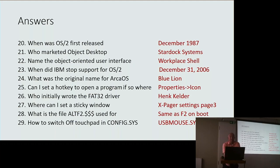When was OS/2 first released? December 1987 — I will accept 1987. Object Desktop was marketed by Stardock Systems, but I think most people knew that. The object-oriented user interface: Workplace Shell or Presentation Manager are acceptable. When did IBM stop support? December 31st, 2006 — 2006 is acceptable.